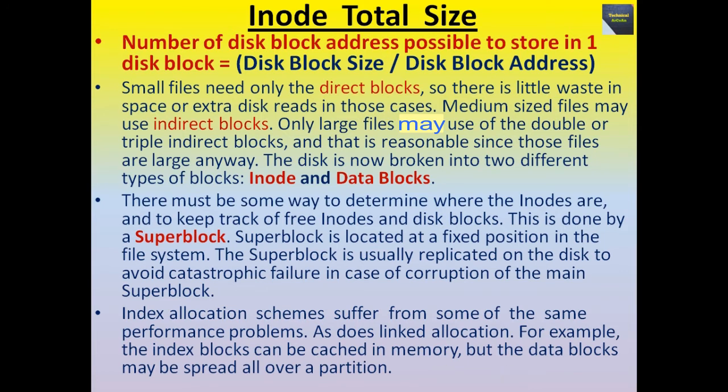The disk is now broken into two different types of blocks: inodes and data blocks. There must be some way to determine where the inodes are and to keep track of the free inodes and disk blocks. This is done by a super block. Super block is located at a fixed position in the file system. The super block is usually replicated on the disk to avoid catastrophic failure in case of corruption of the main super block.